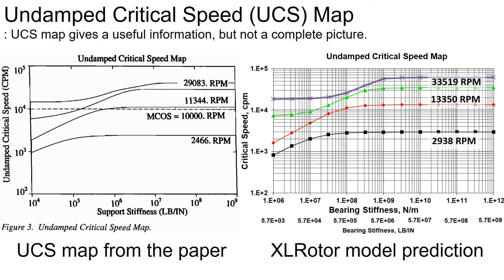Going back to the critical speed map, this map provides the information needed to understand the basic response behavior of the rotor. For example, it provides a preliminary estimate of the critical speeds and their sensitivity to the support dynamics. In addition, the influence of imbalance distribution can be assessed using the resulting mode shapes. With increasing x-axis bearing stiffness, the critical speed increases and the rotor motion will be more of a bending mode shape.